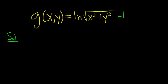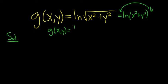So you can write this as the natural log of x squared plus y squared to the 1 half. Then you can put the 1 half in the front, okay, using the power rule for logs. So g of x, y equals 1 half ln, and then x squared plus y squared.